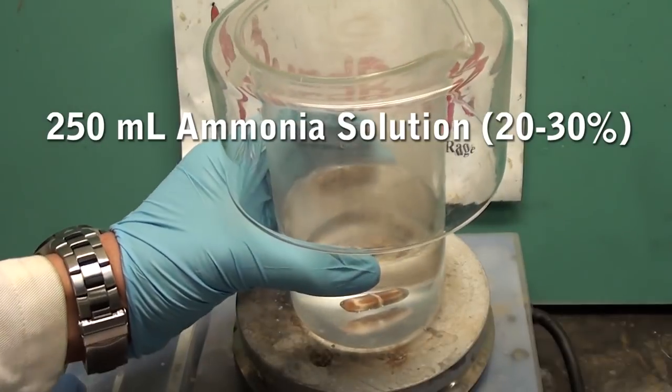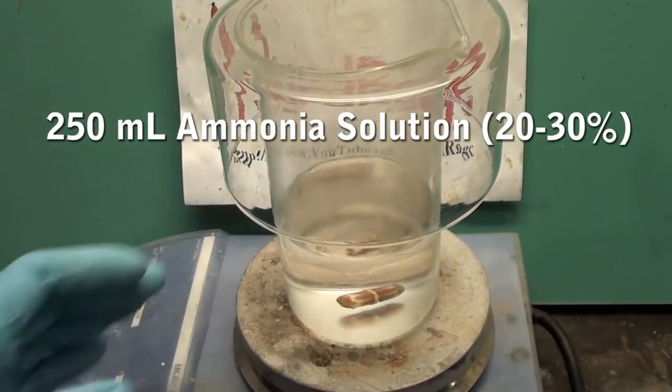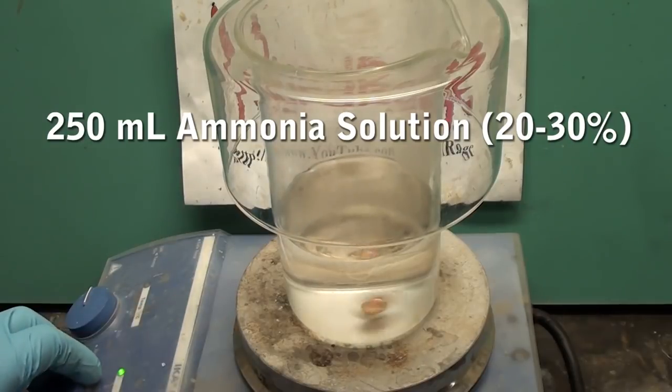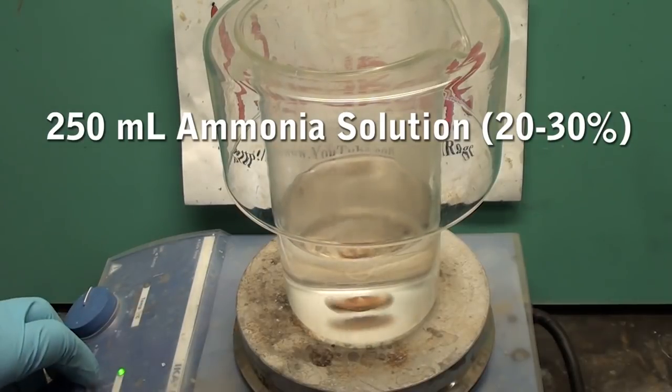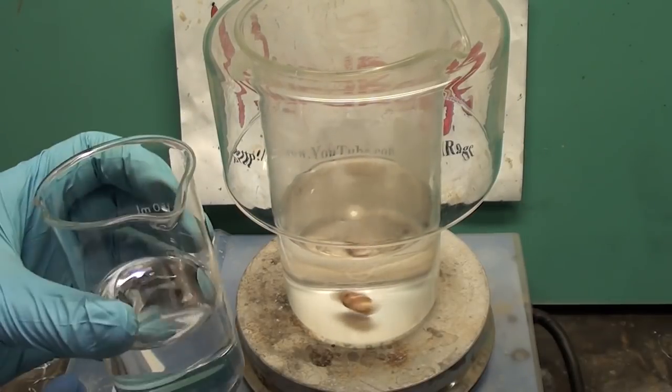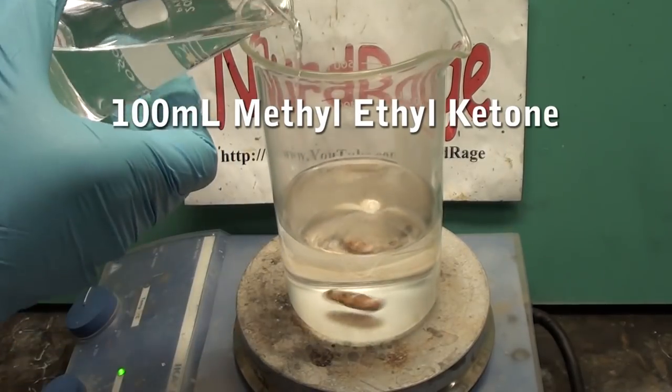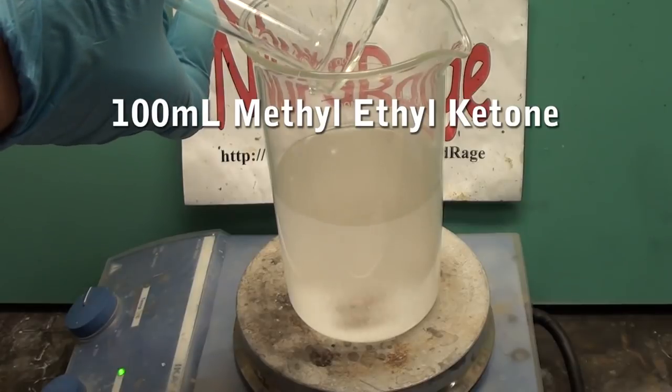First we start with 250mL of concentrated ammonia solution. I'm using a 30% solution but this will also work with lower concentrations at the cost of some yield. Now add directly to it 100mL of methyl ethyl ketone. This is available in hardware stores as a cleaning solvent.